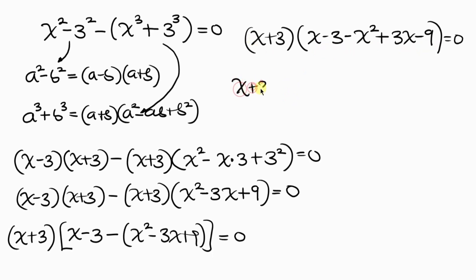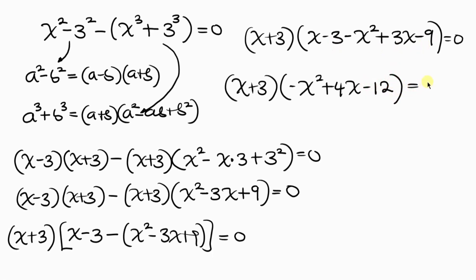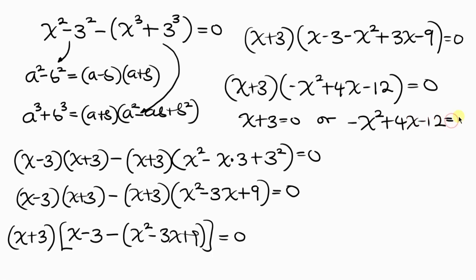Now we simplify: x plus 3 times, combining like terms, negative x squared plus 4x minus 12, equal to 0. There are two cases: the first case is x plus 3 equal to 0, or the second case is negative x squared plus 4x minus 12 equal to 0. We're going to solve these two cases one after the other.